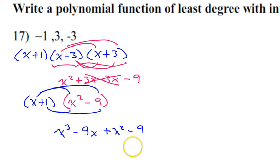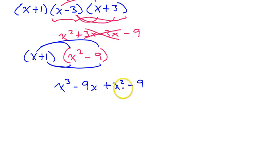Now we're just going to rewrite this in standard form, basically switching these two around. So our final answer will be x to the third power plus x squared minus 9x minus 9.